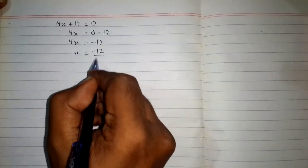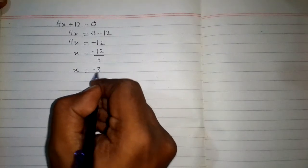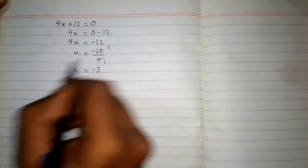So we have minus 12 upon 4. And when we divide minus 12 by 4, so we will get minus 3 because 4 times 1 is 4 and 4 times 3 is 12.